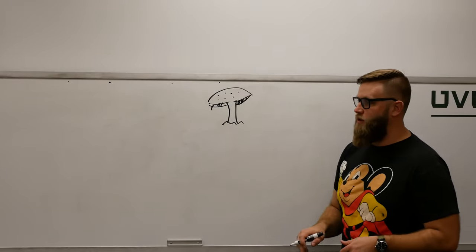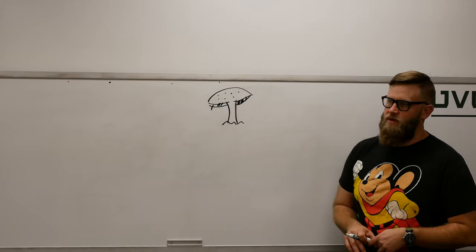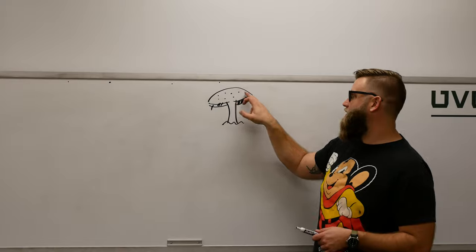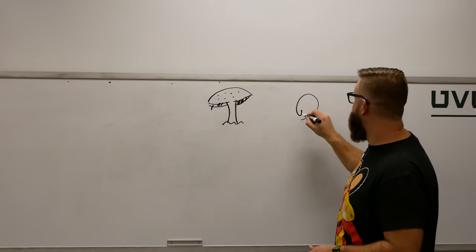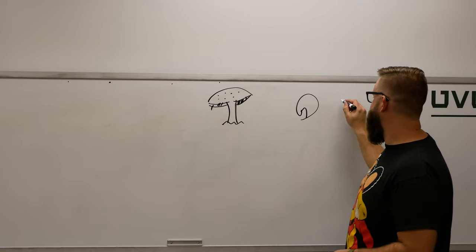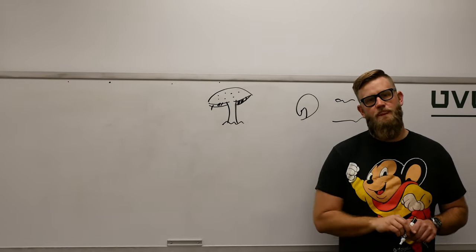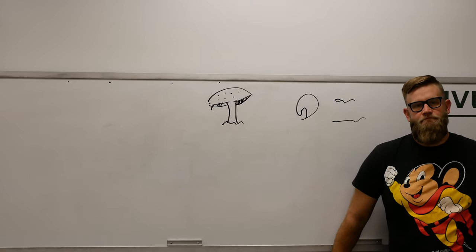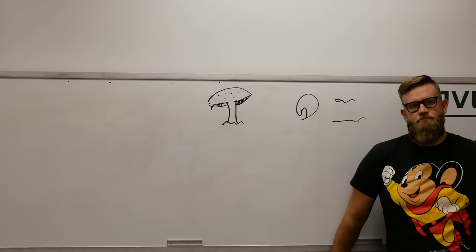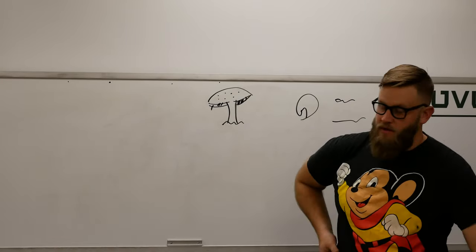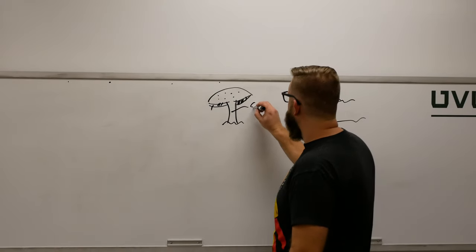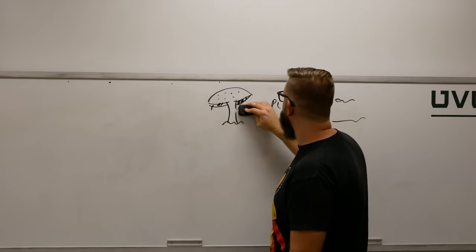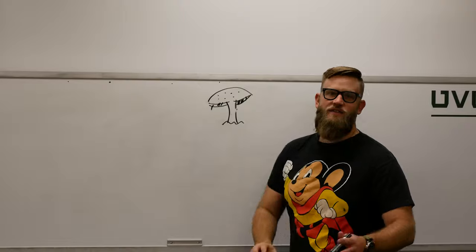Starting here with the mushroom — I want to talk about how the pileus forms, how it opens from something like an egg, breaks, and then we've got an annulus. I'll leave this in the video so you can see the process. This is the stipe or stalk.